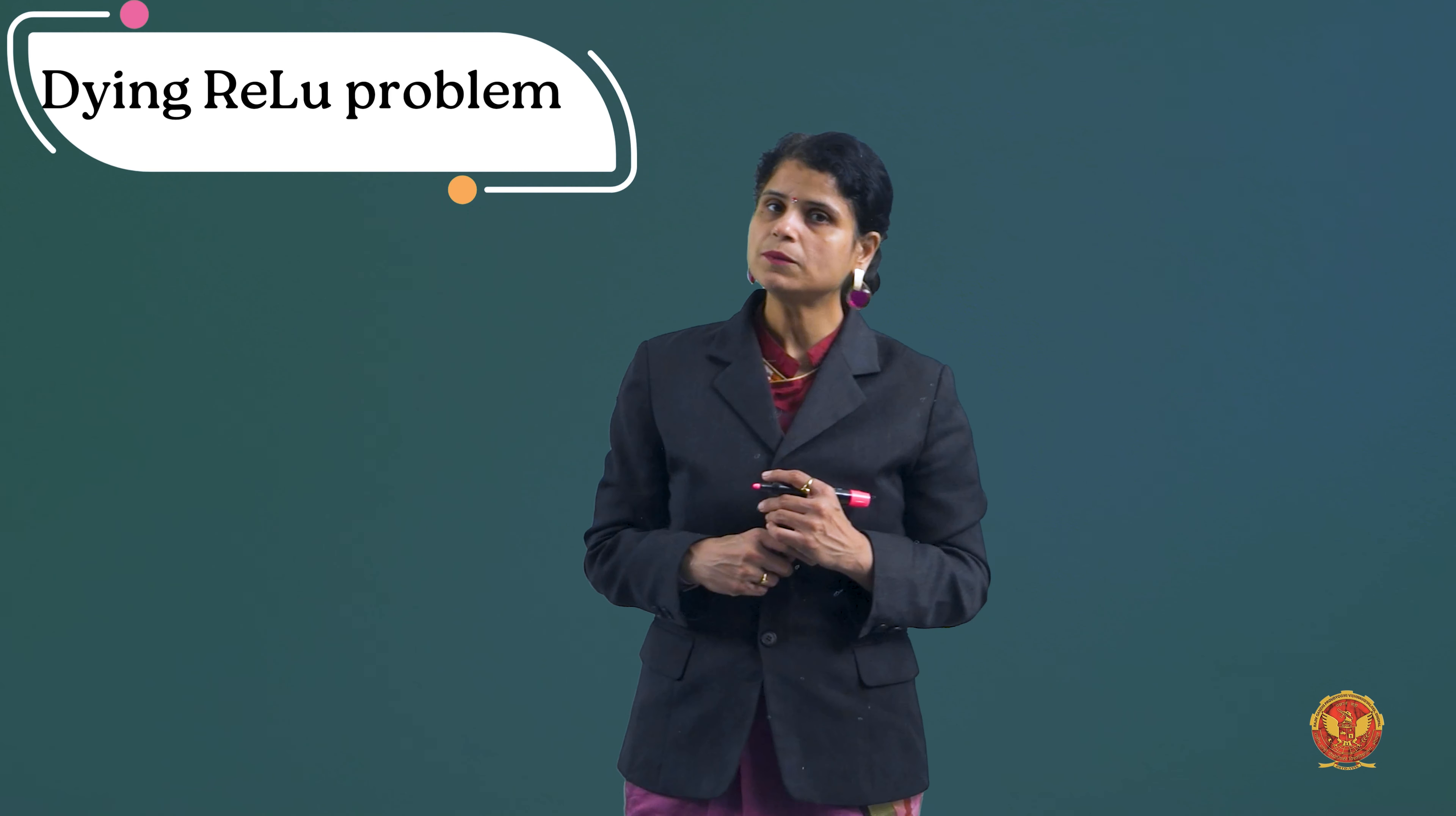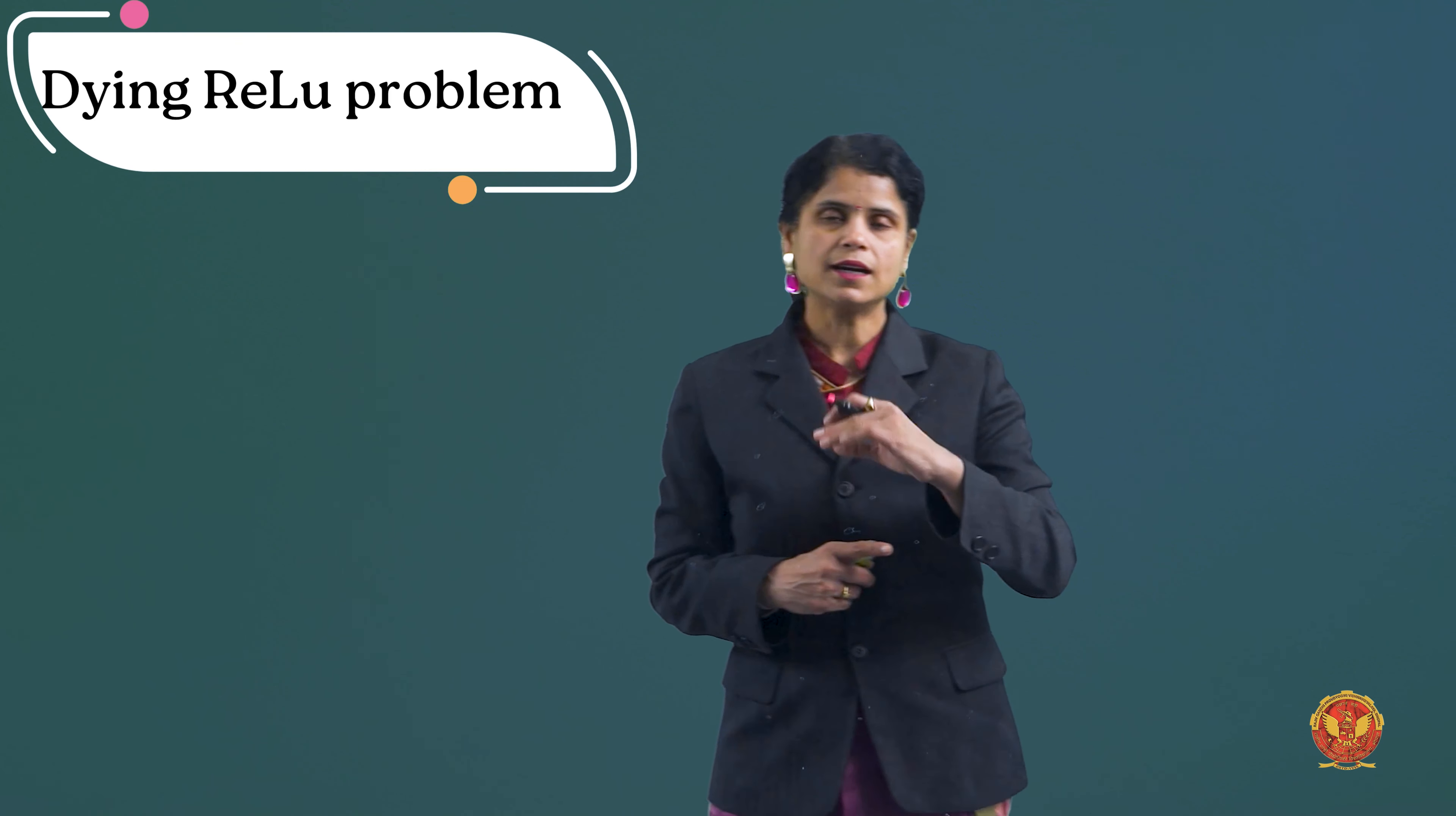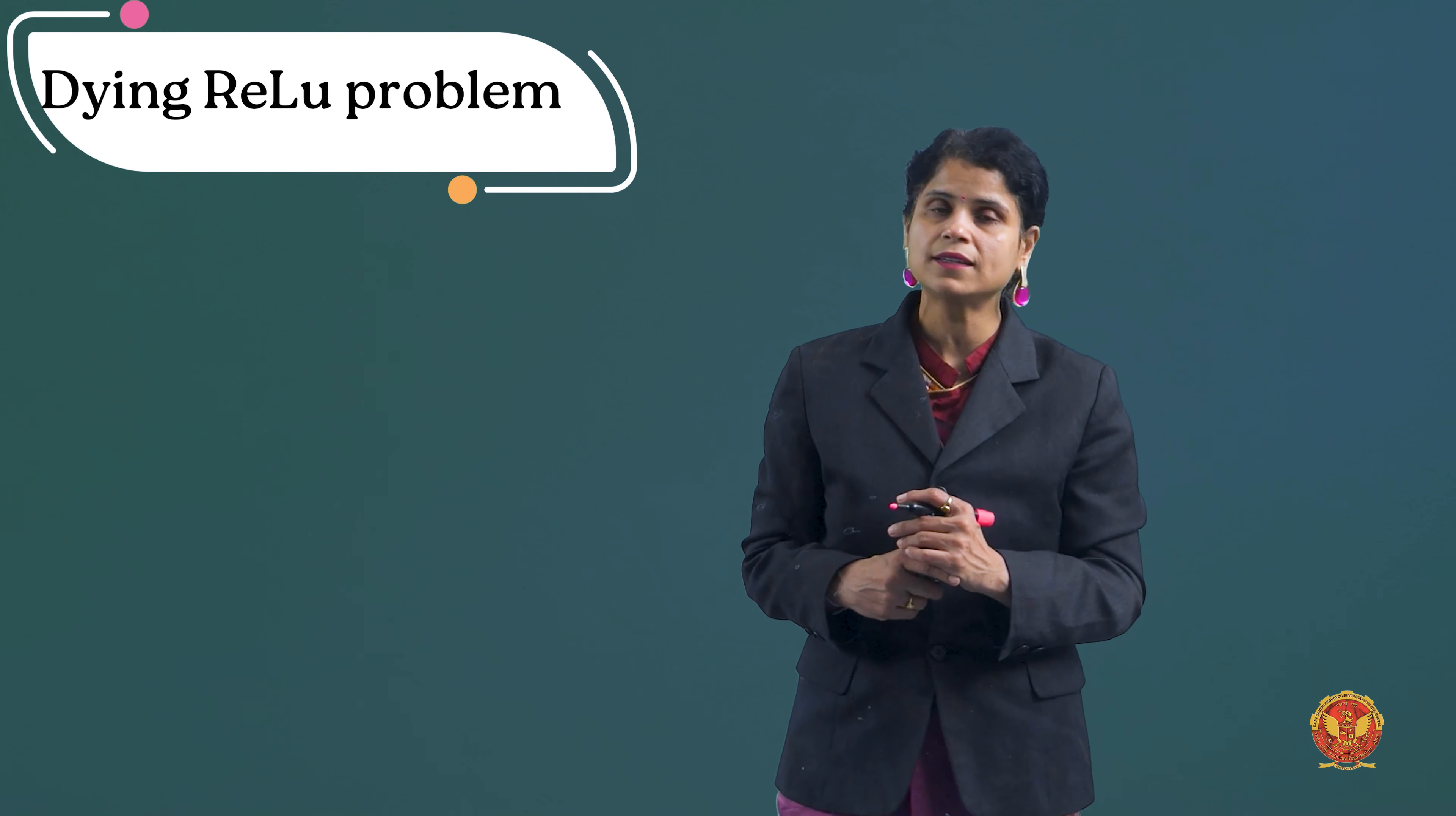Now there is one more problem: Dying ReLU problem. What happens when your value is negative? That means if x is less than 0, then in that case we can't learn anything because its value is 0. If there are 3-4 values negative, then you have 0 value every time. This problem is the dying ReLU problem. Because at this time, when we apply gradient descent, then learning will not be done. And if learning will not be done, then the weight updates will be stopped. If we have a hidden layer and negative value, so when we go to the other hidden layer, what will we get? It will be 0. So this is the dying ReLU problem.